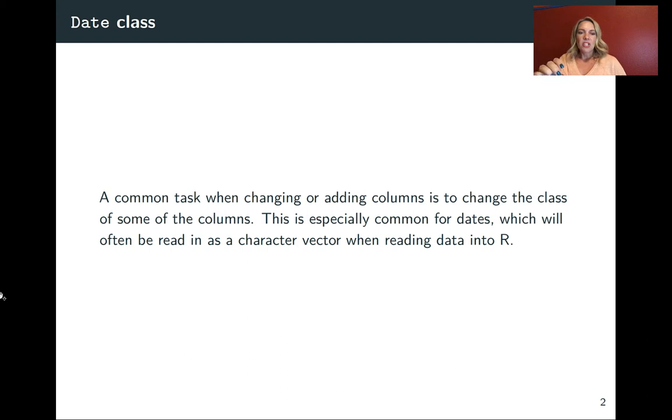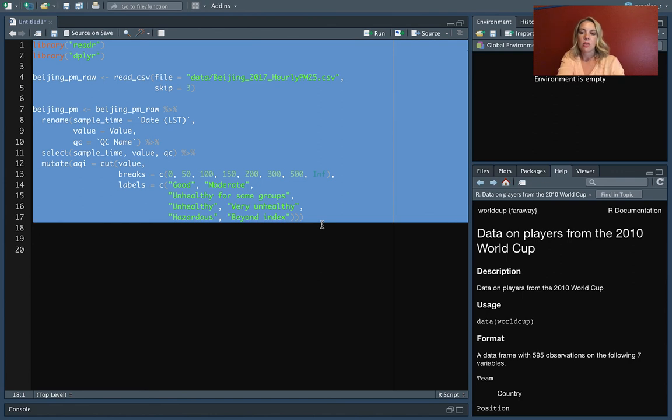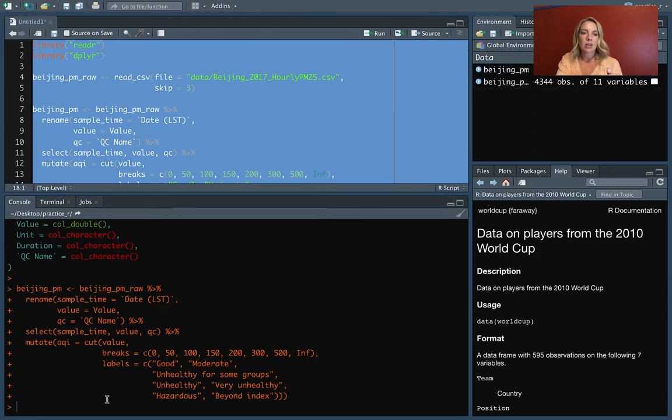This is often one that you will need to mutate once you read in data. Often you'll have a column that has your date or date time, but when you read it in initially it will be read in as a character vector. We can look at that Beijing example data. If you go to the very first video lecture for this chapter, there's information about getting this data and reading it in and cleaning it up. All you might need to do is highlight the code for reading it in and running it.